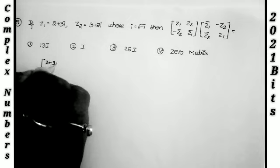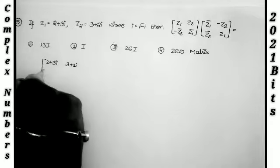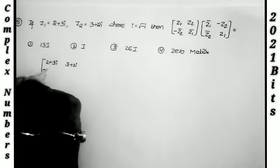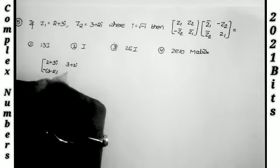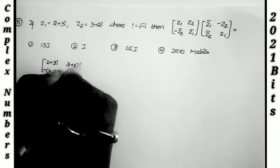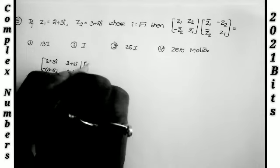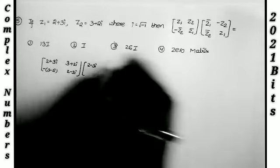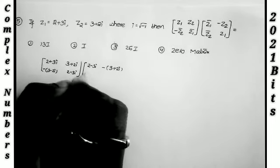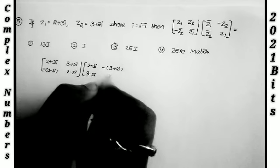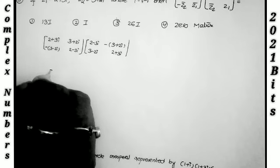The first matrix is [[z₁, z₂], [−z₂-bar, z₁-bar]] = [[2+3i, 3+2i], [−(3−2i), 2−3i]] and the second matrix is [[z₁-bar, −z₂], [z₂-bar, z₁]] = [[2−3i, −(3+2i)], [3−2i, 2+3i]]. I now compute the product of these two matrices.